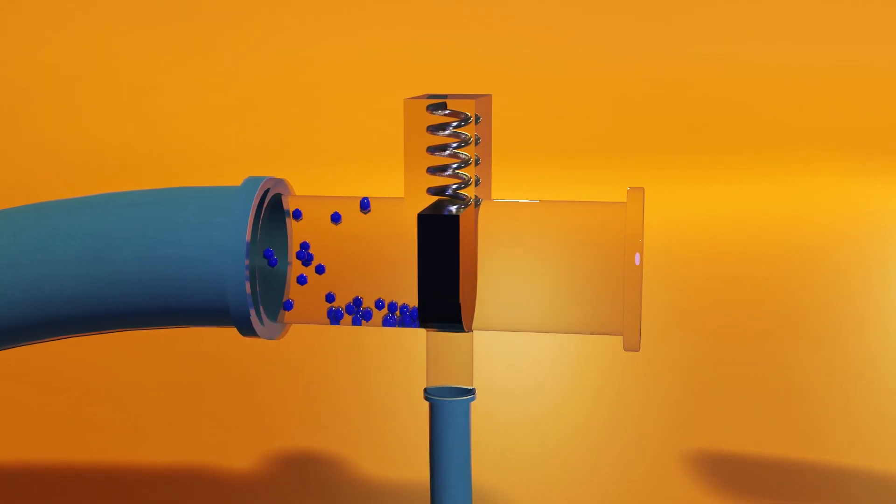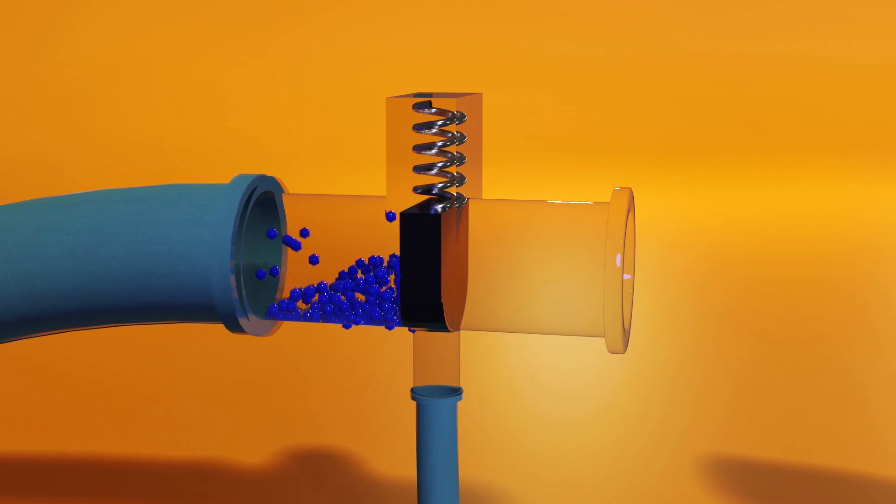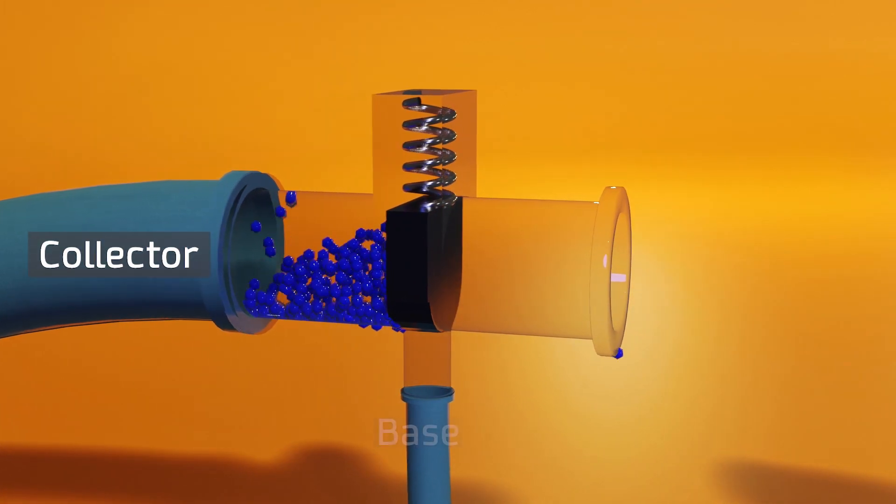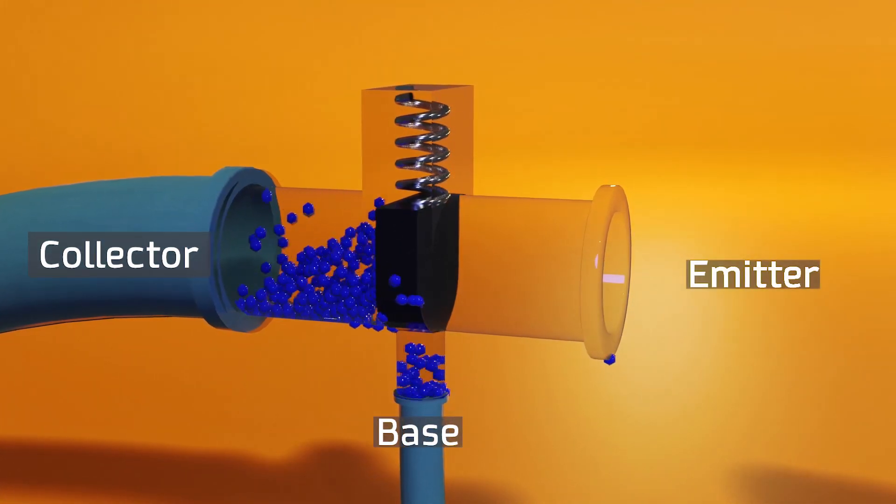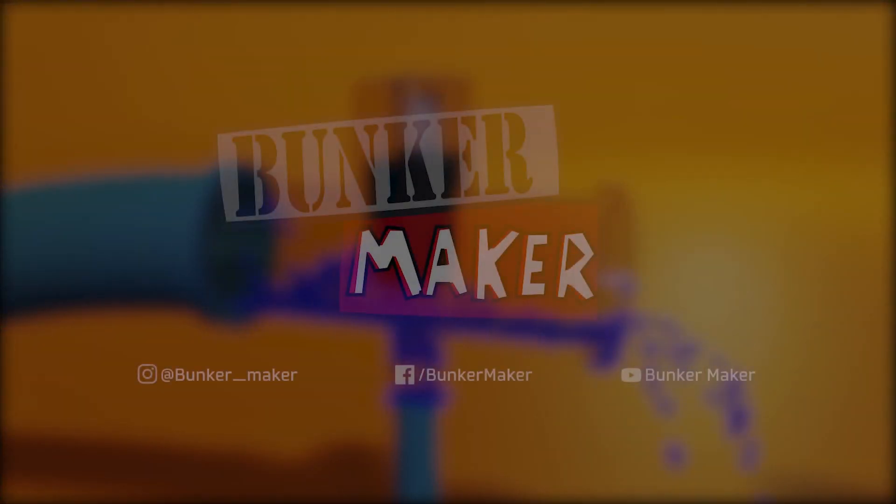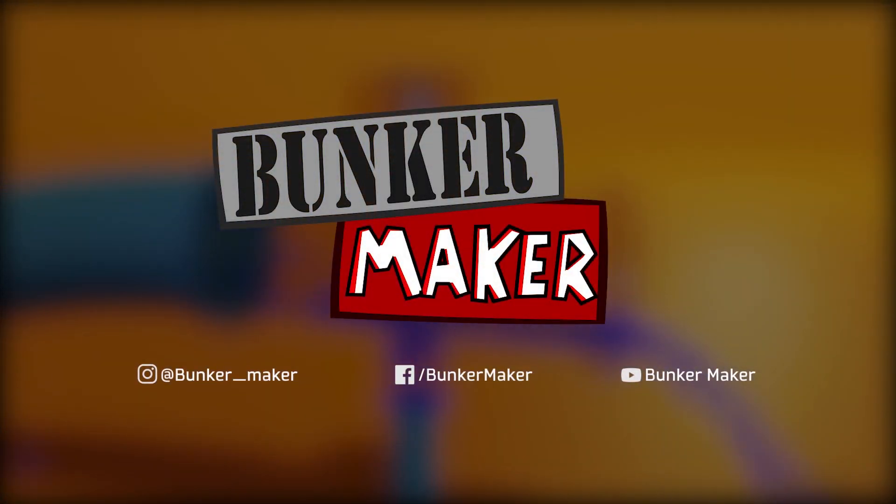Another way to understand a transistor is to compare it with a stopcock in which the pipe is the collector, the base is the key that controls the flow of water, and the emitter is the water outlet. By the way, I never say it in the middle of the videos, but since I have your attention, remember to subscribe and follow me on Instagram where I share the progress of the new videos.